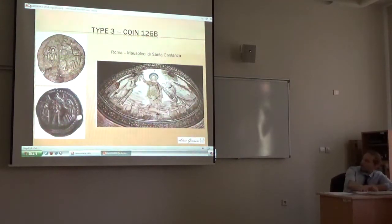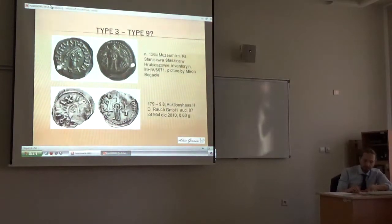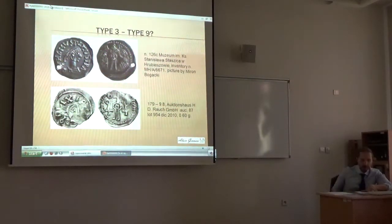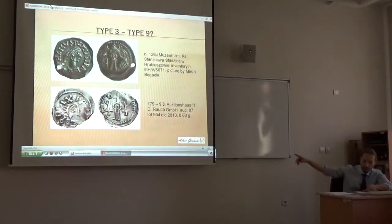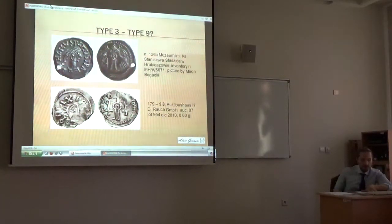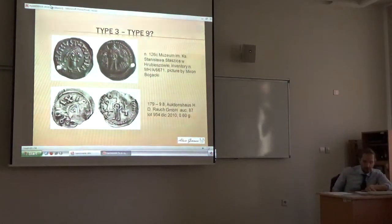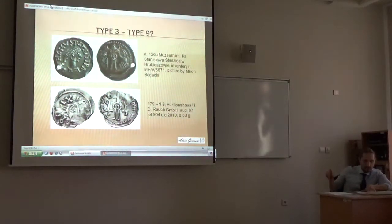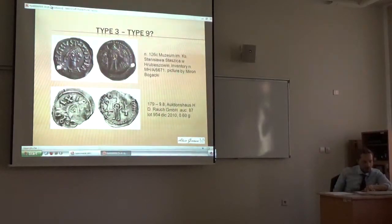Coin number 179, even if I afterwards placed this coin in section Type 9 because of the very crude reverse and the border style, this coin could be considered the last phase of Type 3. Look at the altar, the cross, the border, and what I thought might be the crown of thorns, and the two figures that now have two christograms — one of those is peculiar. These are all Christian symbols.